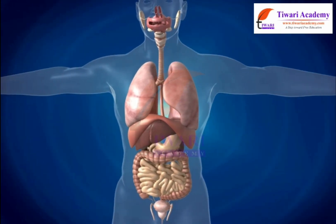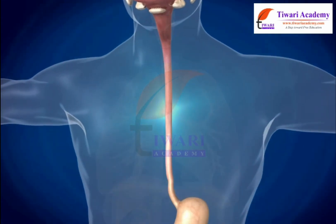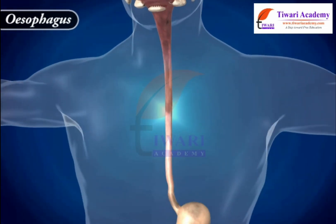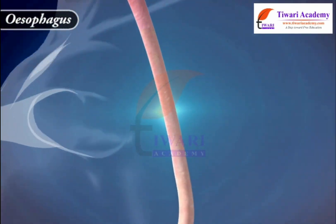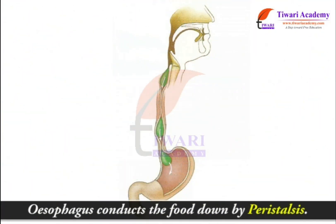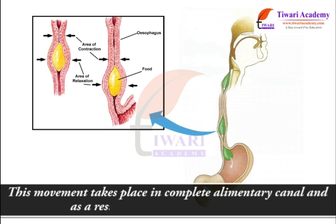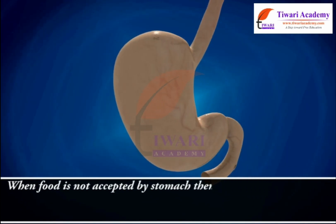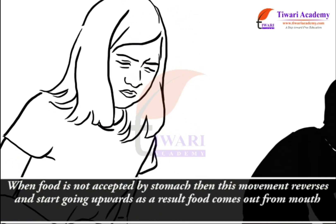The swallowed food is passed into the food pipe or esophagus. Esophagus is a long, narrow and tubular part of the digestive system. It passes through the neck and pharynx and opens into the stomach. Esophagus conducts the food down by peristalsis — this movement takes place in the complete alimentary canal and as a result food is pushed downwards. When food is not accepted by the stomach, this movement reverses and food comes out from the mouth, which is called vomiting.